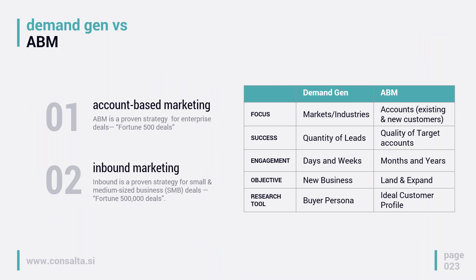In U.S. terms, account-based marketing is a proven strategy for enterprise deals — Fortune 500 deals. In Europe, that means bigger corporate and enterprise organizations. Inbound marketing is a proven strategy for small and medium-sized businesses. There are of course some differences: with demand gen or inbound we focus on different markets and industries; with ABM we focus on accounts, which could be existing or new customers. Success with demand gen is measured by quantity of leads; with ABM it's very much about quality of target account engagement.